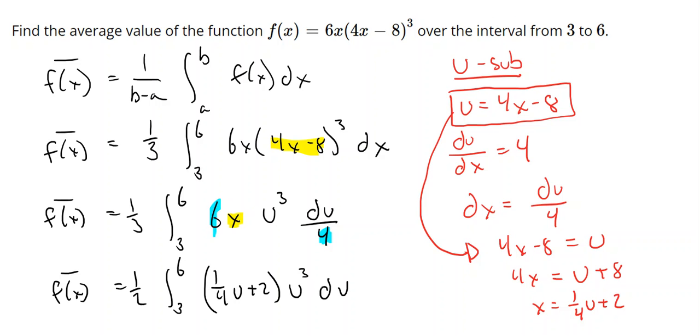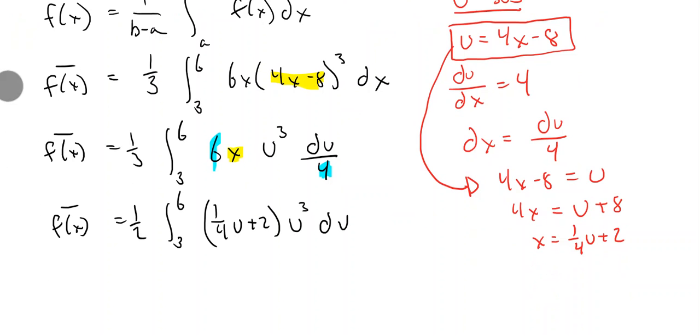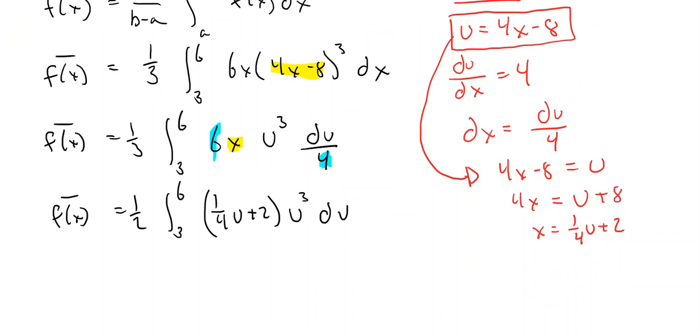All right, now we can multiply these together. We're going to take 1 fourth u plus 2 and multiply it by u cubed. And that will give us 1 fourth u to the fourth plus 2u cubed du.